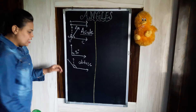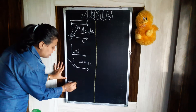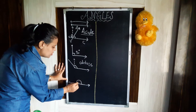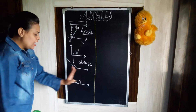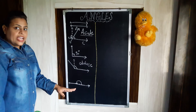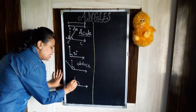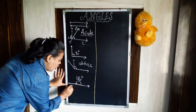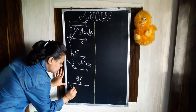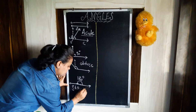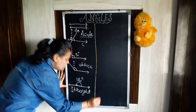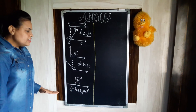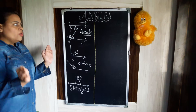Now we have another type of angle — that is a straight angle. When two lines intersect such that they form a 180-degree angle, we call it a straight angle. It is called a straight angle because the lines are totally straight.